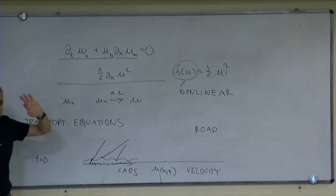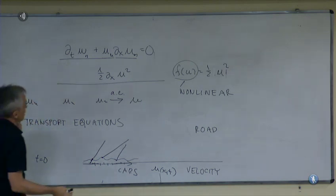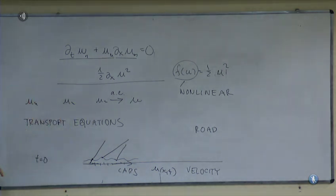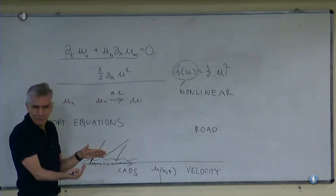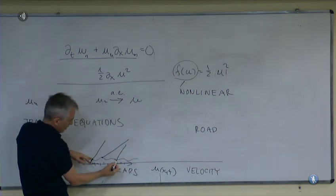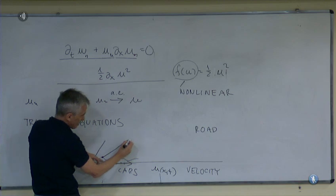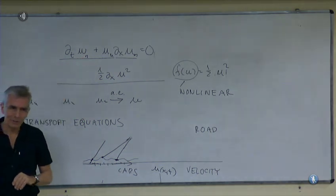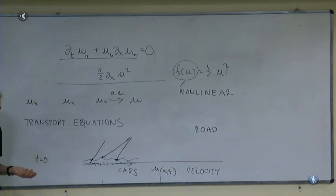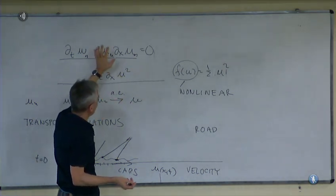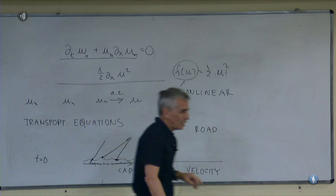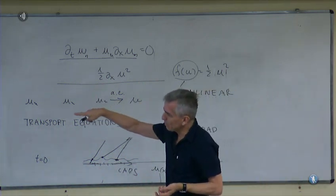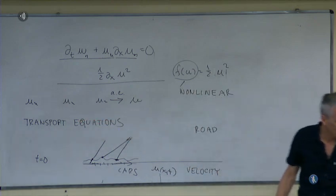This equation can be used as models for other phenomena, but that's one of the simplest interpretations. You can immediately see something is wrong — if you have cars like that, keeping velocity forever is not possible. If one car is slow and the car behind is fast, after some time they will collide. The motion will not be smooth — this is indeed what happens for this equation. The nonlinearity causes this.